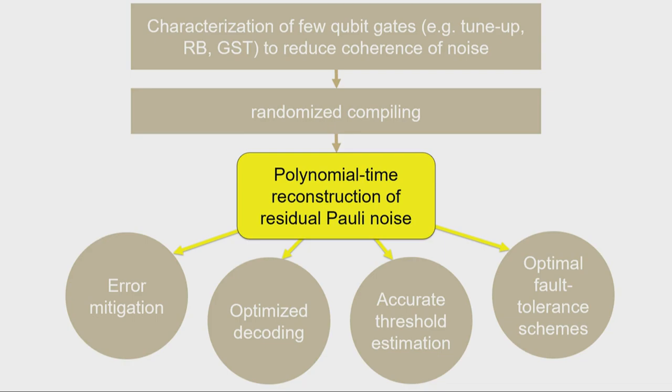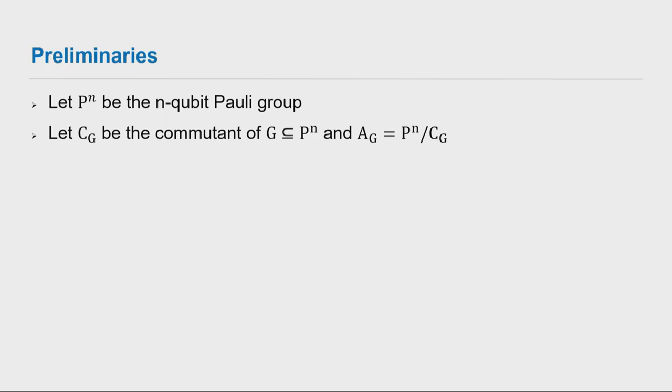Randomized benchmarking, gate set tomography, everything we know works well under the assumption that you have close to independent noise, even though we know it's going to be bad, basically because you need to get somewhere close to the right parameter space, otherwise your search landscape is going to be horrible. Then you do randomized compiling to give you an effective Pauli noise channel, and then we want to reconstruct the residual noise, which we can then try and compensate and correct, either using new calibration routines or doing things like error mitigation or fault tolerance schemes, based on the actual noise we have. So now just to give some preliminary details of the sort of outline, just some quick notation.